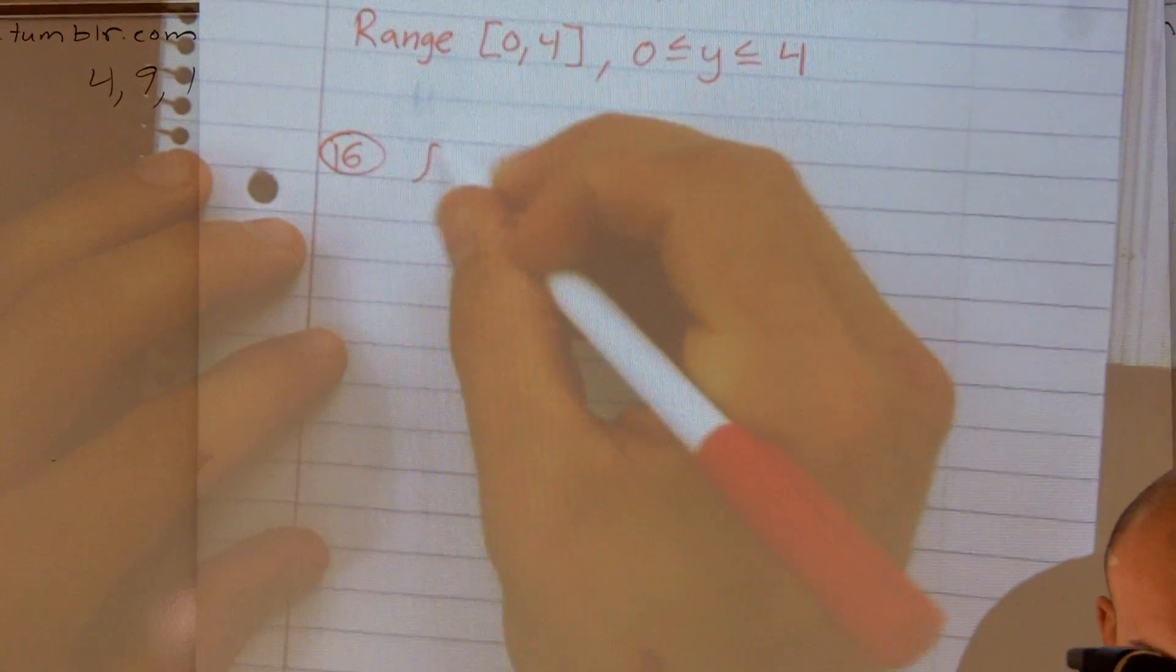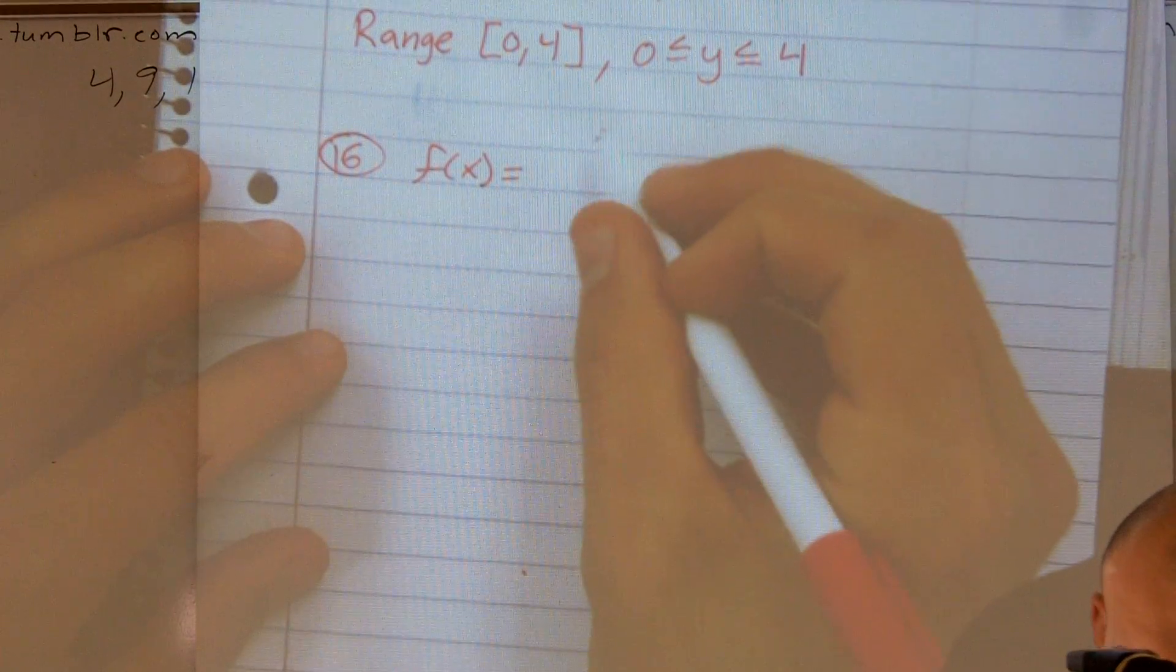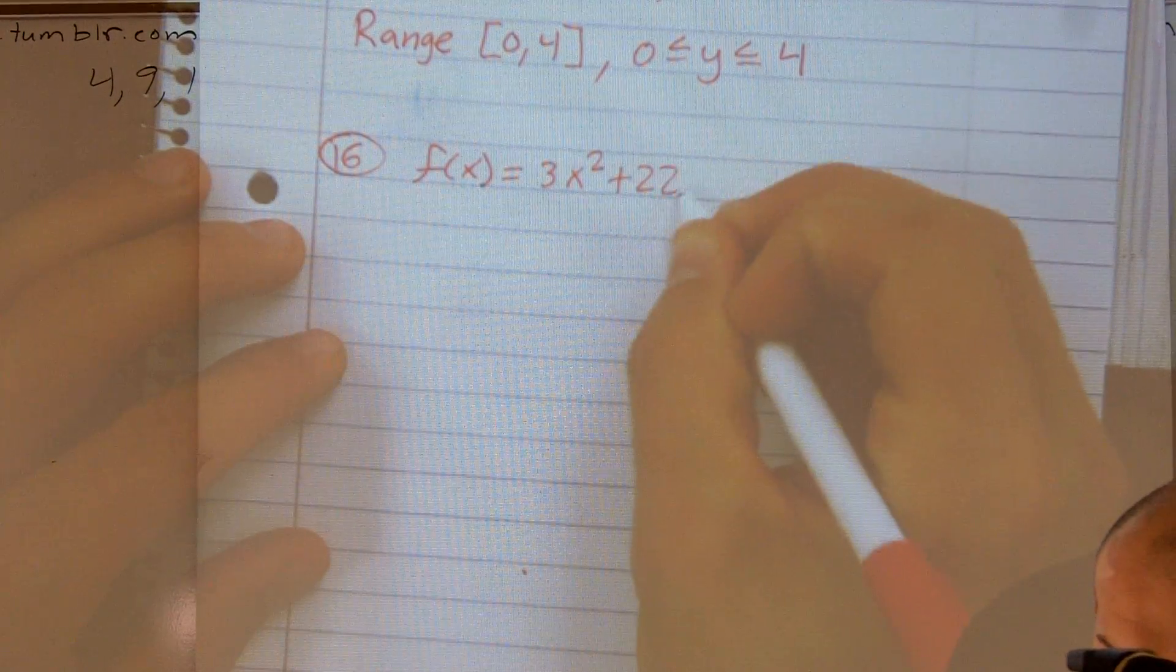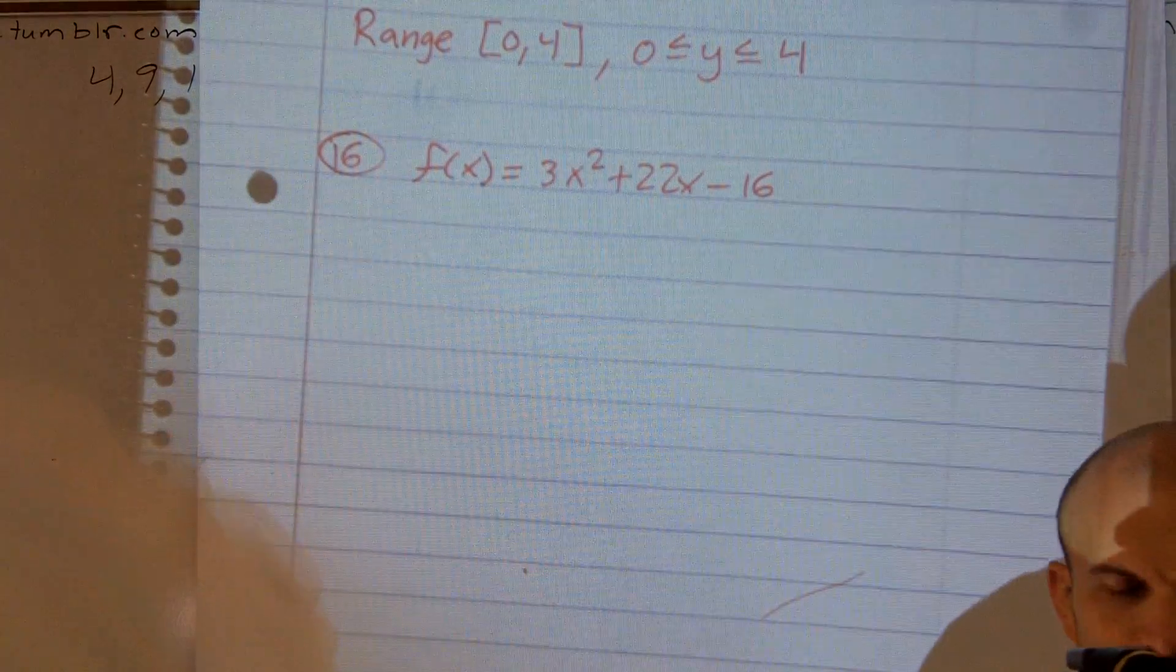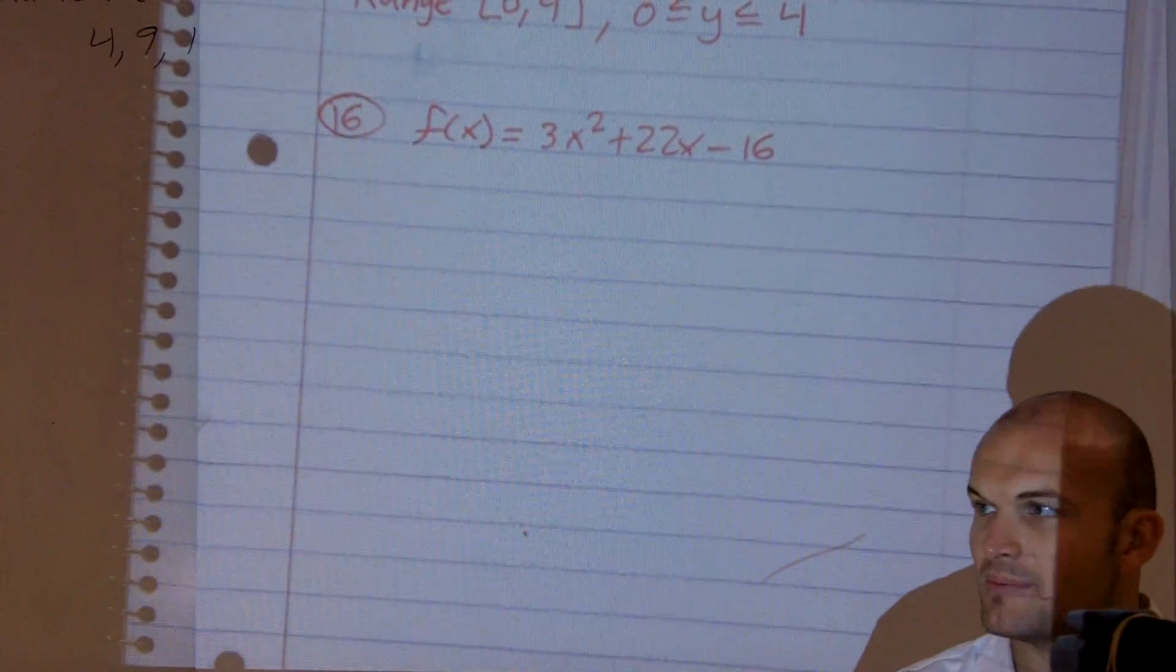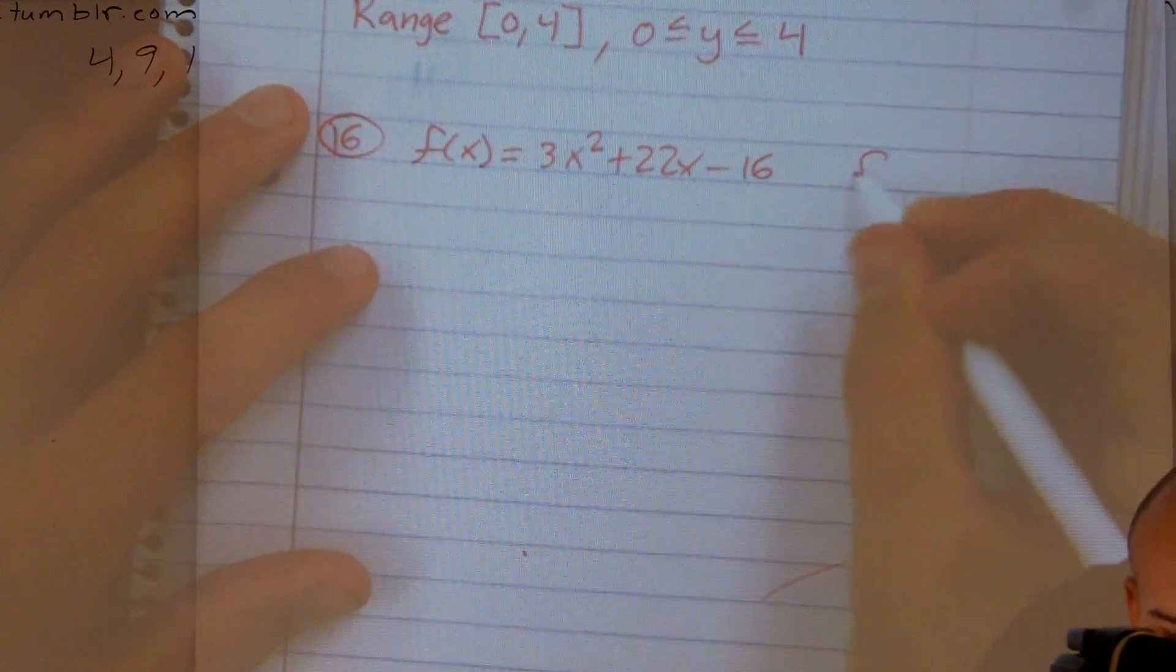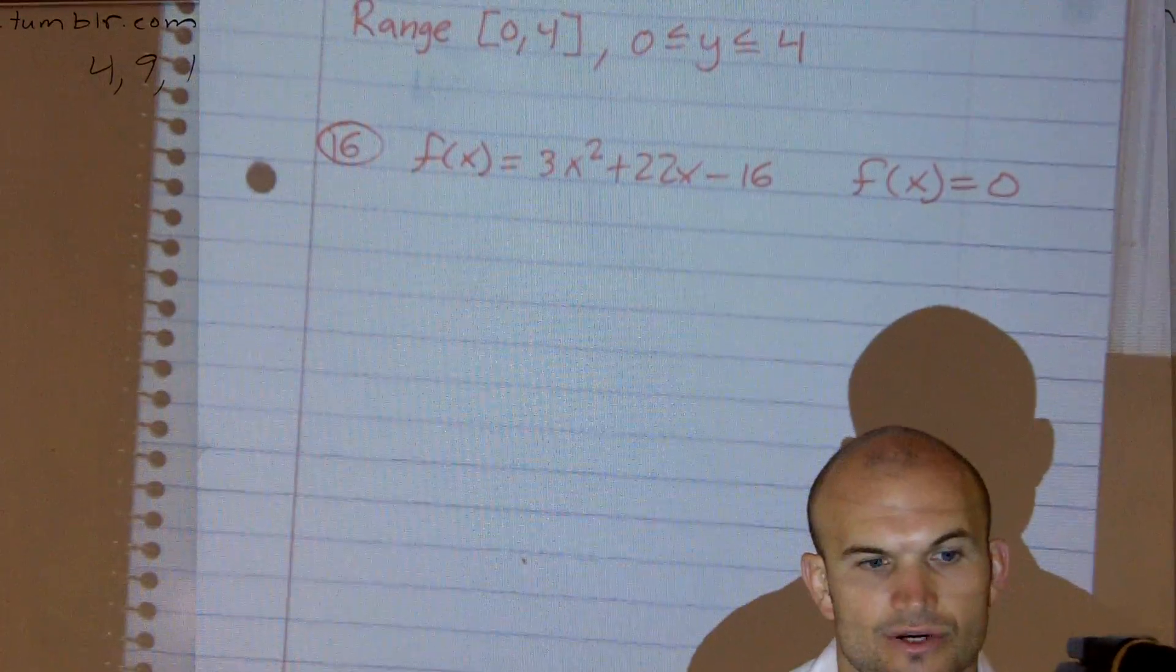So I have f of x equals 3x squared plus 22x minus 16. So remember when it says find the zeros of a function, what I'm looking for is what are the values of x that make the function zero. So really what we're looking for is what values of x make f of x equal zero.